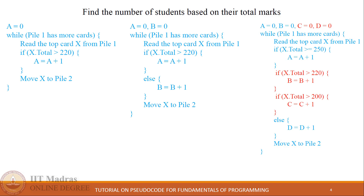The second if condition, which checks if total marks are greater than 220, is interesting because it executes irrespective of the outcome of the first if condition. Therefore, variable B counts all students who scored more than 220. Similarly, the third condition counts students who scored more than 200, and the remaining students count is consolidated in variable D. Here, multiple if statements followed by an else block at the end is referred to as an if-else ladder.